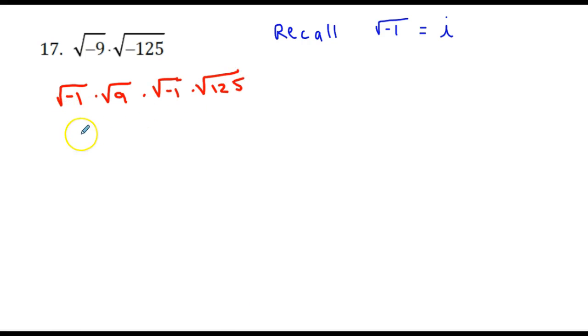The square root of negative 1, we already said, is the same as i, so each of these factors becomes i. The square root of 9 is 3, so we have i times 3 times i. And the square root of 125 can be thought of as the square root of 25 times 5.